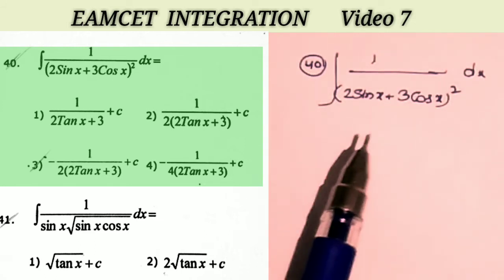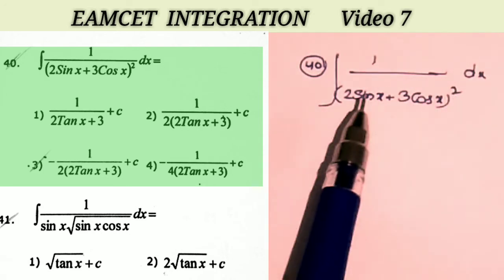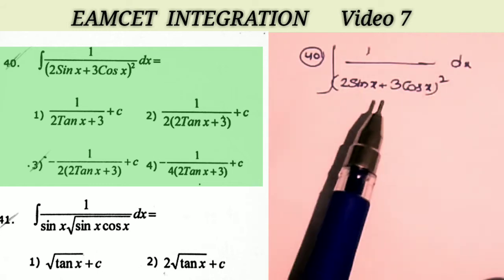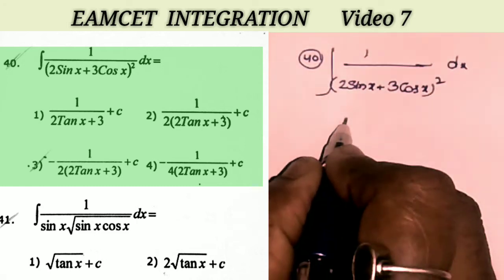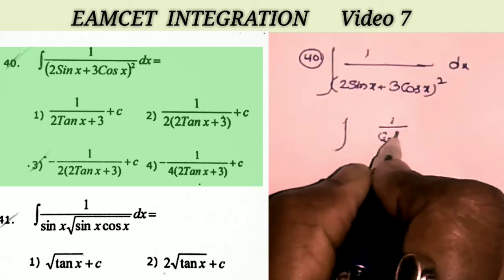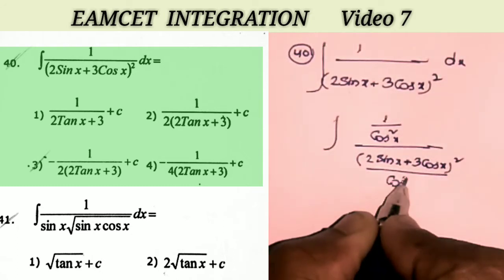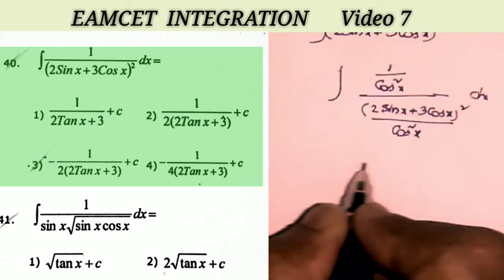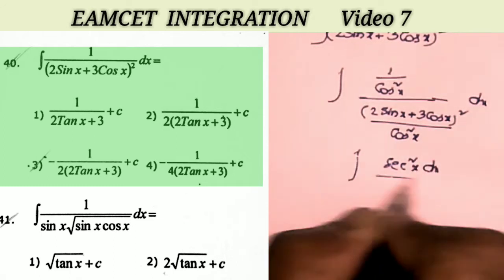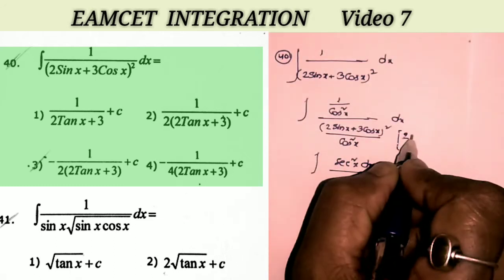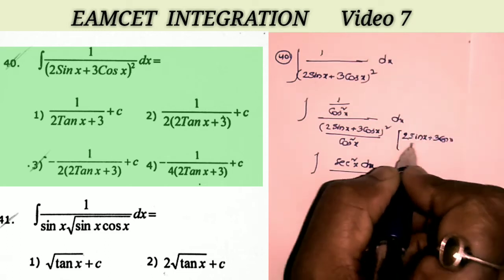Already I explained about this point in the previous videos. This (2 sin x + 3 cos x) whole square means here we have sin² x and cos² x — that is, we divide the numerator and denominator by cos² x. So we get: integral of (1/cos² x) divided by (2 sin x + 3 cos x) whole square / cos² x, dx. This equals integral of sec² x dx divided by (2 sin x + 3 cos x) / cos x, whole square.